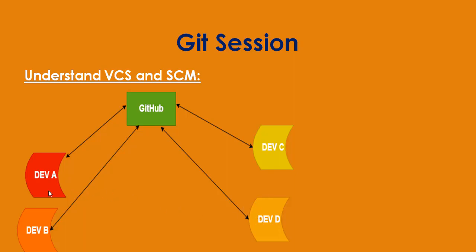Dev A and Dev B started writing back-end code using C#.NET and VB.NET. Dev C started writing UI code using HTML, CSS, JavaScript, jQuery, Bootstrap, Angular, and React. Dev D started writing database scripts using SQL Server, Oracle, and MySQL. Everyone keeps their files on their own local system.